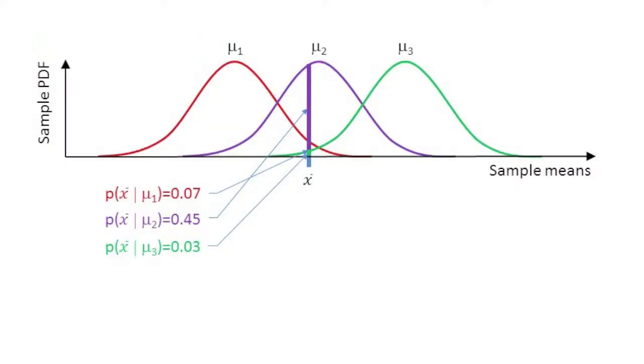Your intuition may have told you that it was more likely that the sample came from the population with the mean of μ2 than from the other two populations. But by using statistical inference, we can quantify the probabilities associated with each of the three possible sources of the sample.